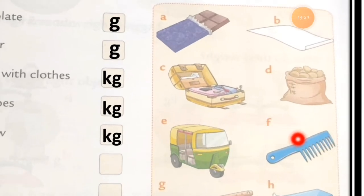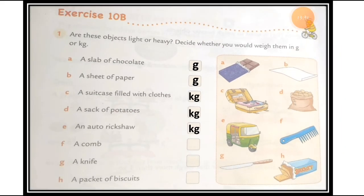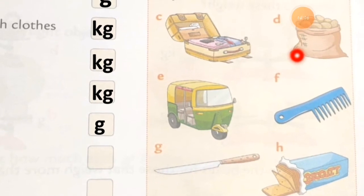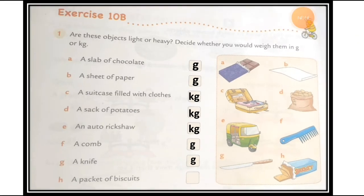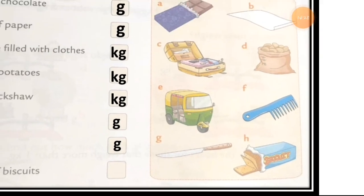Number (f): a comb — the hair comb you use for combing your hair. A comb is a very light thing; you can hold it with just one hand or even your fingers. So we measure the comb in grams. Number (g): a knife, which we use to cut vegetables, fruits, and bread. A knife is also a very light thing — write 'gram' for the knife.